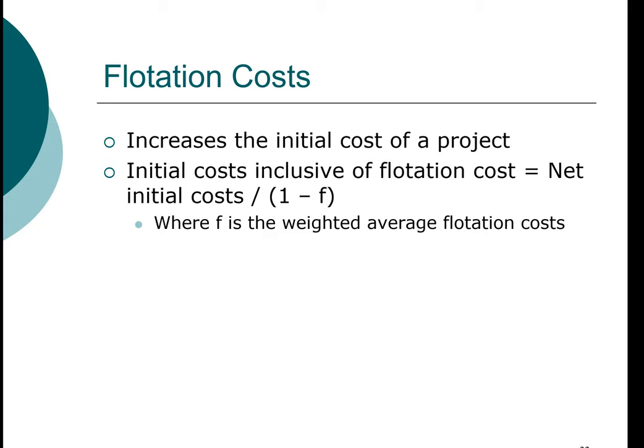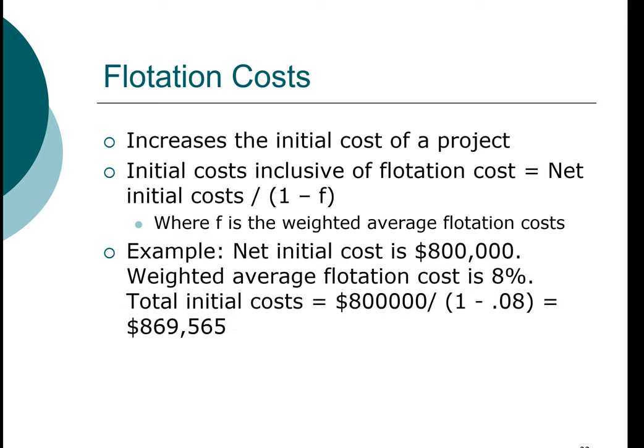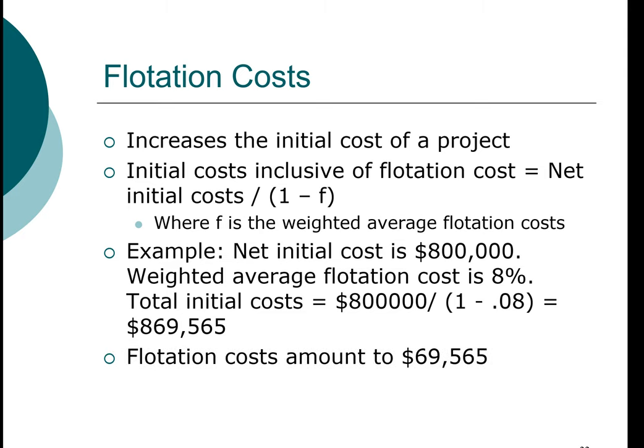Let's take a simple example. Say a project has a cost of $800,000, and the weighted average flotation cost is 8%. In order to raise the $800,000 to start this project, you will need to increase the total initial cost using the formula to $869,565. So the flotation cost for this particular project is $69,565. The important takeaway is that you need to incorporate flotation costs — money is not free, and when we take that into account, the cost of the project is higher.